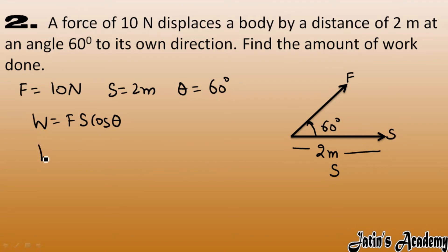Now work done is equals to force value is 10 Newton, displacement 2 meter and cos 60 degree. So, from the value chart cos 60 we have 1 by 2. Okay, cos 60 degree we have 1 by 2. This is 2 and this is 10. So, from here work done we got it as 10 Joule.